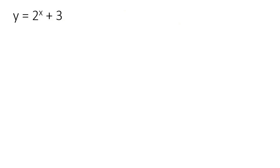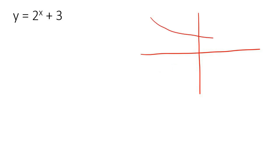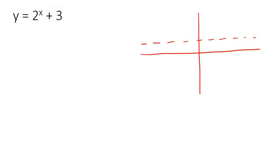The first thing I want you to understand is that exponential graphs, whether they look like this or whether they go down — there are so many different variations — they have asymptotes. They have one asymptote, and that asymptote is a dotted line. To know what that asymptote is, you just have to look at this number over here. That's the first thing you need to know.